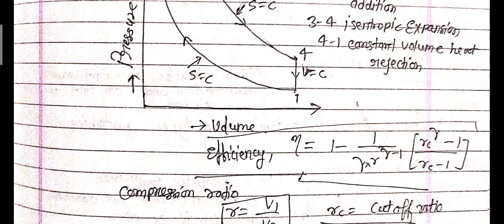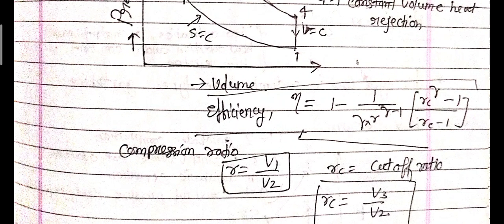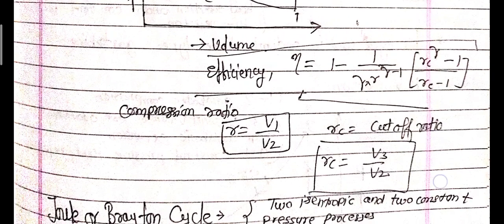The efficiency of the Diesel cycle is: η = 1 - (1 / (γ · r^(γ-1))) · [(rc^γ - 1) / (rc - 1)], where rc is the cutoff ratio, r = v1/v2 is the compression ratio, and rc = v3/v2.